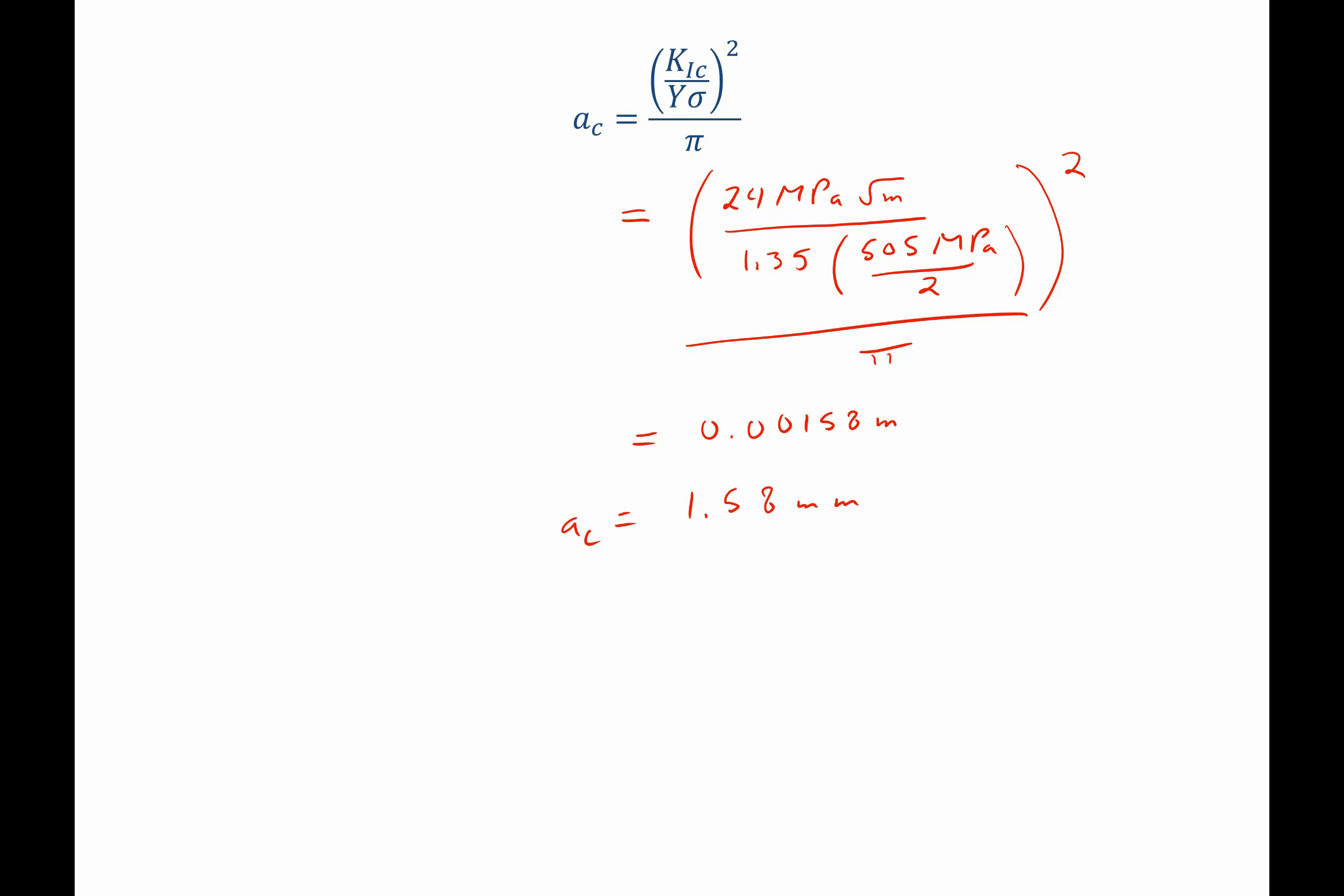However, we are told in this question that this is an internal flaw. And we know that if an internal flaw has a total length, say x, that x is in fact equal to 2 times the half-crack length. Therefore, our total length is going to be this number multiplied by 2, which is 3.16 millimeters.